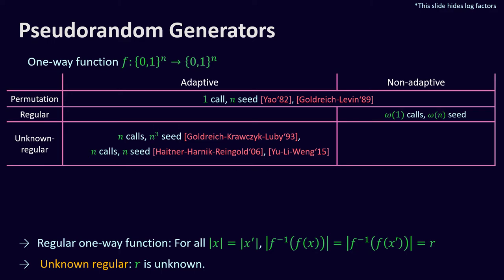Yu, Liu, and Weng later improved the seed length by a log factor with a minor cost in call complexity, by using a different but related approach that converts any unknown regular function into a non-regular function on a different domain.